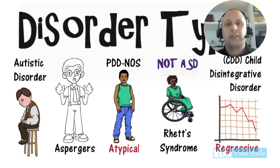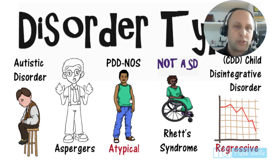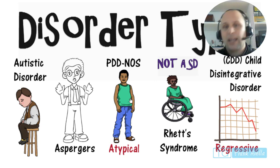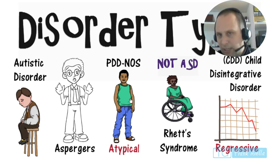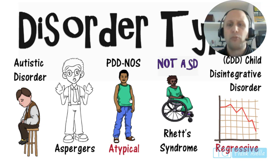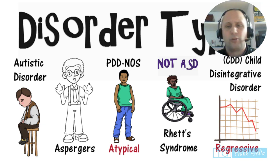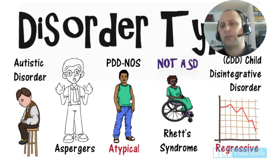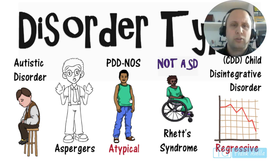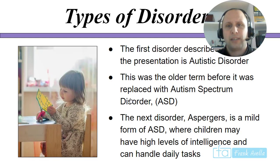The disorder types within ASD began with basic autistic disorder, Asperger's, atypical PDD-NOS. Rett syndrome is now not considered a form of ASD, although it was at one point. Childhood disintegrative disorder is also among the disorder types. We're going to explore all of these now.